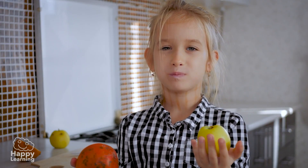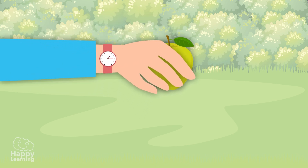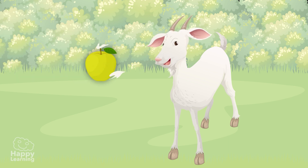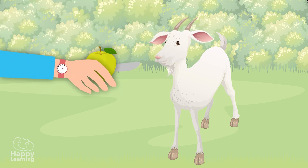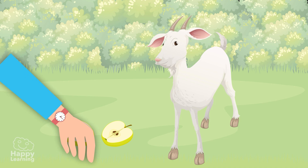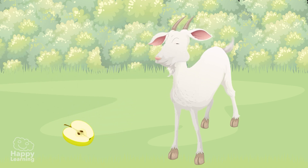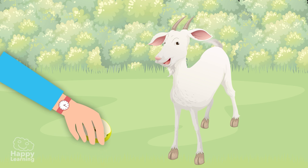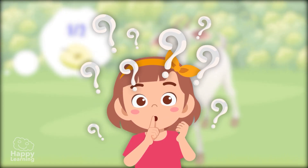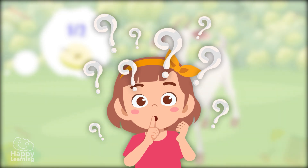Let's imagine I have this apple and I have to feed this cute little goat. The apple is very big, so I'm going to split it in half — into two equal parts. I've split the apple into two equal parts. I'm going to give one of those parts to this little goat. I'll keep the other part. I gave her half of the apple — a half. That's a fraction!